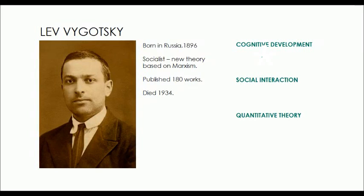This is a small crash course on Lev Vygotsky's sociocultural theory of development. Lev Vygotsky was a Russian man, born in 1896, the same year as Piaget. He was a socialist and created new theories based on Marxism, which was quite popular at the time. He was quite prolific. He died quite young in his 30s, in 1934, but by then he had published over 180 works.